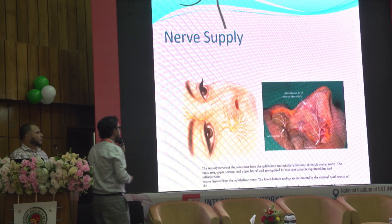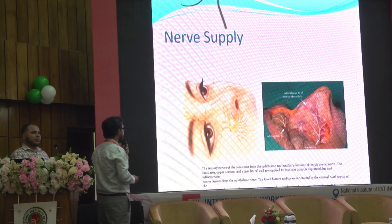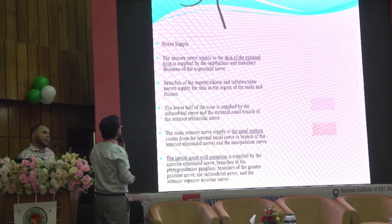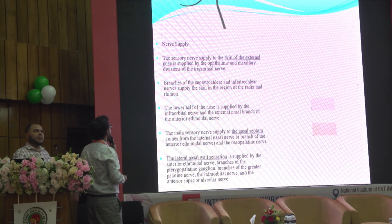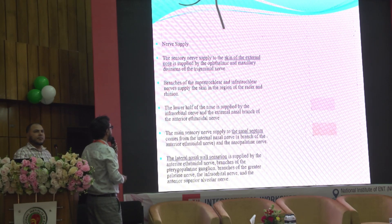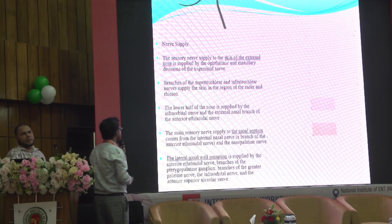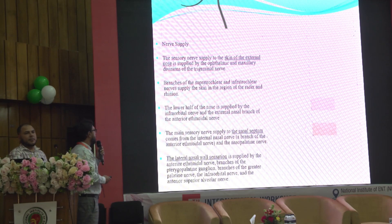The sensory nerve supply of the external nasal skin is supplied by the ophthalmic and maxillary divisions of the trigeminal nerve. Branches of the supratrochlear and infratrochlear nerves supply the radix and rhinion region. The lower half of the nose is supplied by the infraorbital nerve and the external nasal branch of the anterior ethmoidal nerve.